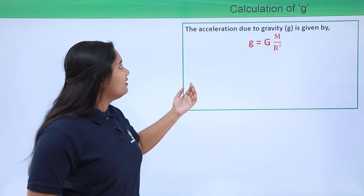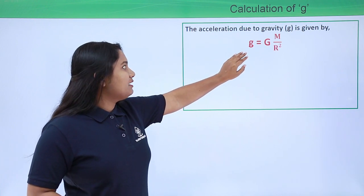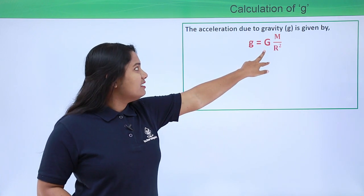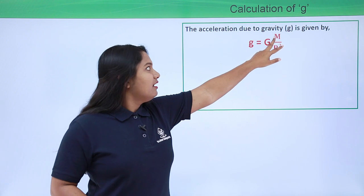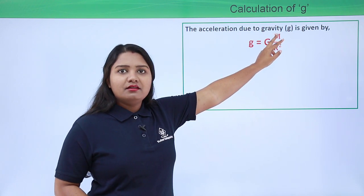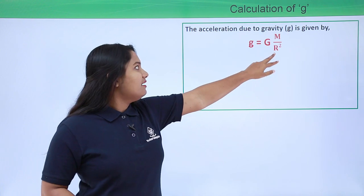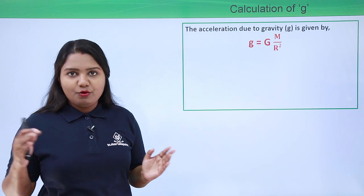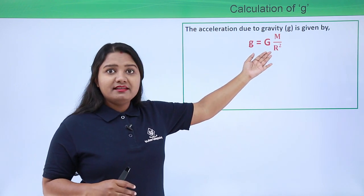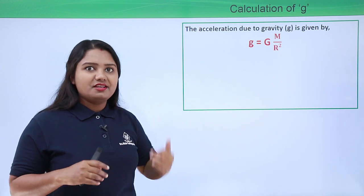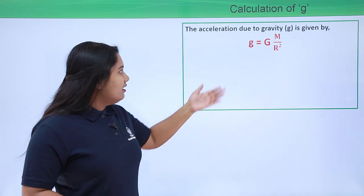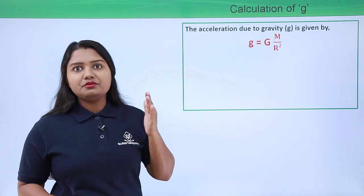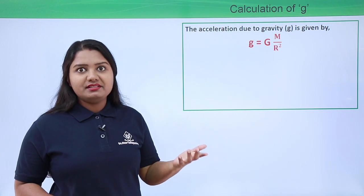In this expression, small g is the acceleration due to gravity, capital G is the universal gravitational constant, capital M is the mass of the Earth, and r is the distance between the center of the Earth and the object — taken as nearly equal to the radius of the Earth near the surface. Using this formula, we can calculate the value of the acceleration due to gravity of Earth near its surface.